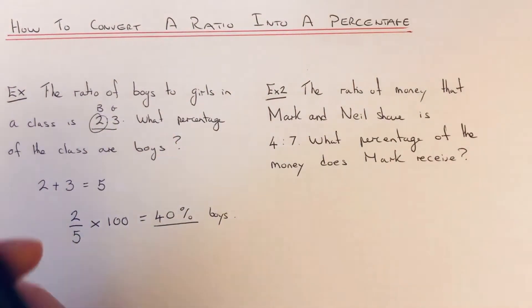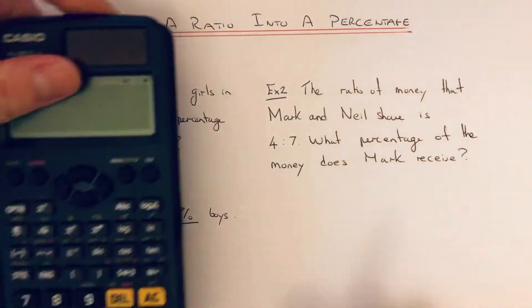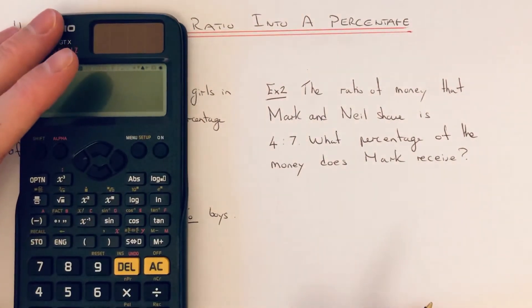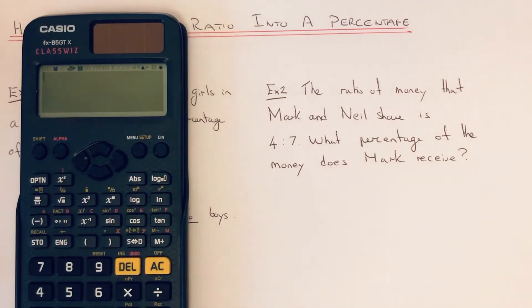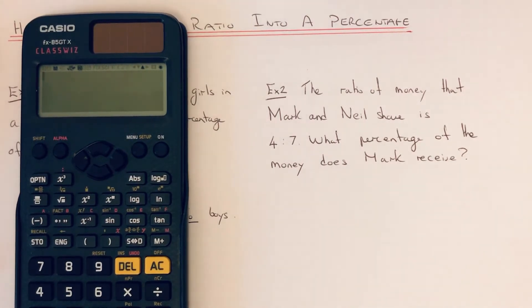Let's have a look at our second example. The ratio of money that Mark and Neil share is 4 to 7. What percentage of the money does Mark receive?